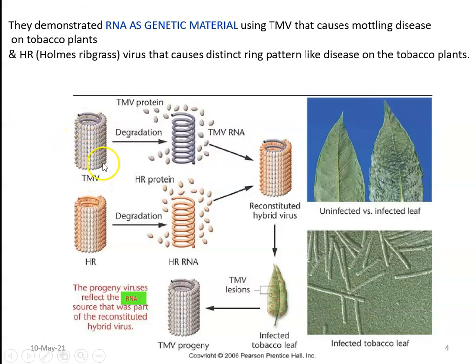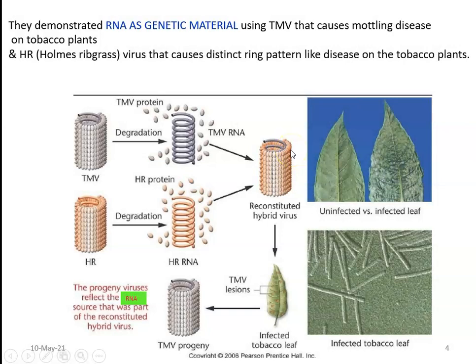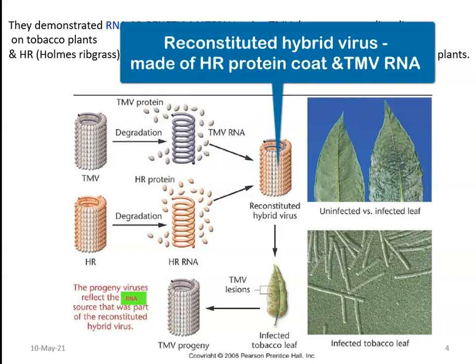Tobacco mosaic virus was subjected to degradation of its protein by using certain enzymes, leaving only the tobacco mosaic virus RNA. Then HR virus was taken and similarly its protein coat was degraded. Both viruses have only two important structures: an outer protein coat and an inner nucleic acid made up of RNA. After degrading the HR virus protein coat using enzyme, they were able to reconstitute a hybrid virus — reconstituted with the protein coat of the HR virus and the RNA of tobacco mosaic virus.